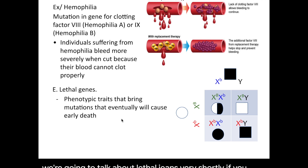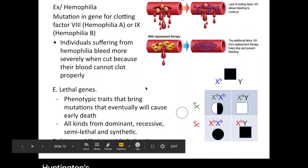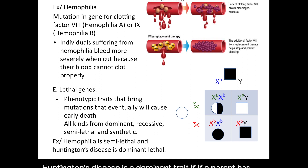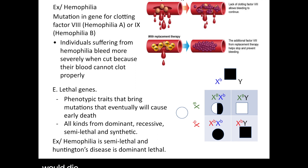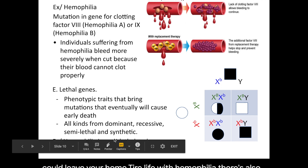Lethal genes are phenotypic traits that cause mutations leading to early death. There are dominant and recessive lethal traits. Huntington's disease is a dominant lethal trait — if a parent has it, there is a higher chance their offspring will also have it and die earlier than expected. Hemophilia is considered semi-lethal, meaning sometimes it can kill and sometimes a person can live their whole life with it.